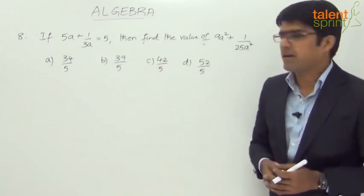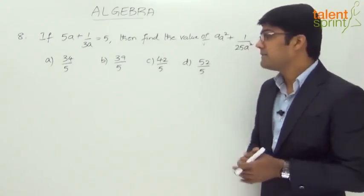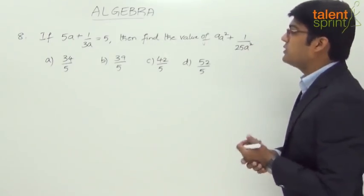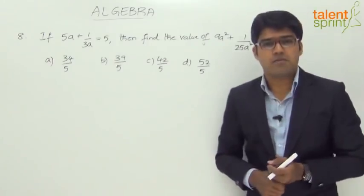We have got the options here: 34 by 5, 39 by 5, 42 by 5, and 52 by 5.